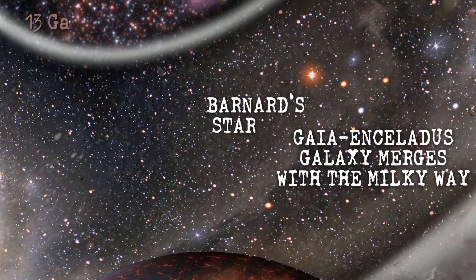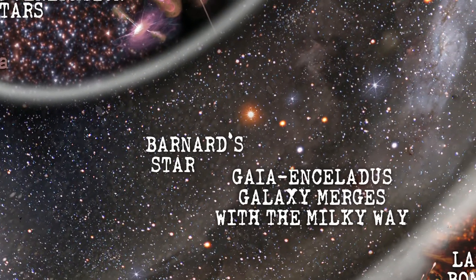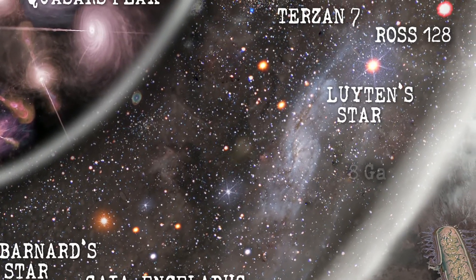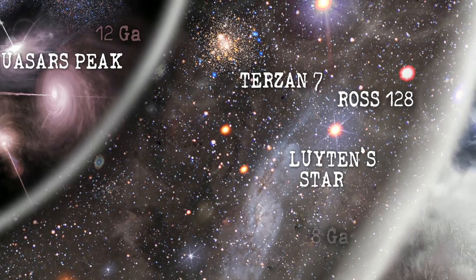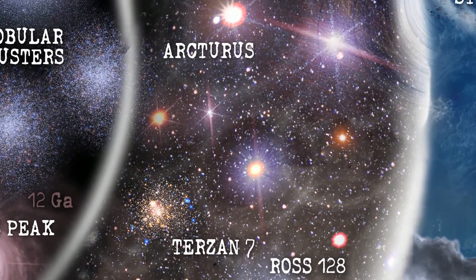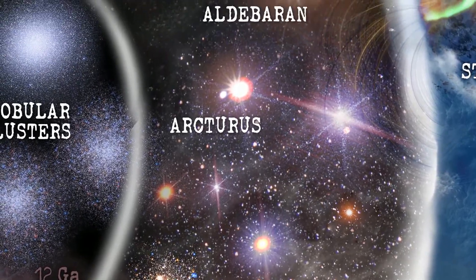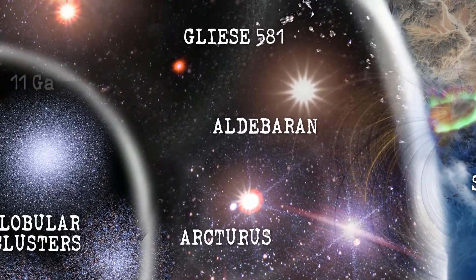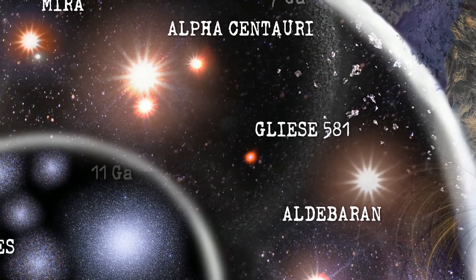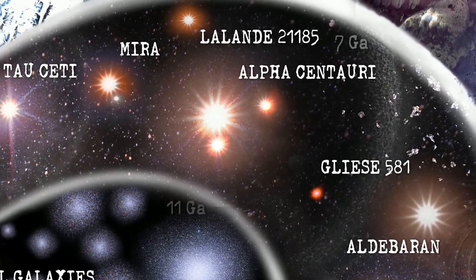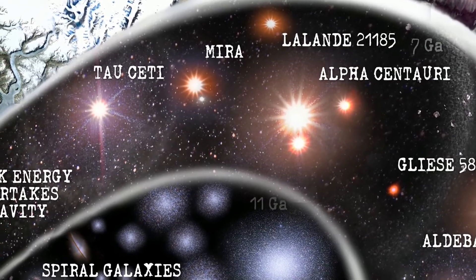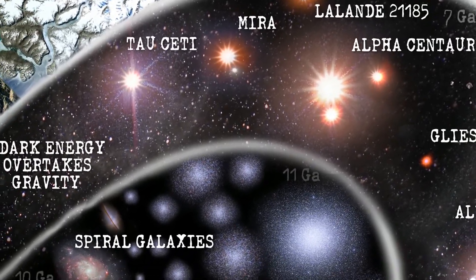Now Pablo is writing many different stars that happen in our galaxy, these are all in the Milky Way. Arcturus, Aldebaran, Gliese 581, Alpha Centauri, our closest star that we know to our system, Lalande 2185, Mira, Tau Ceti, a beautiful one.